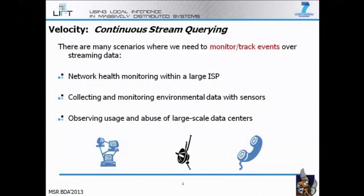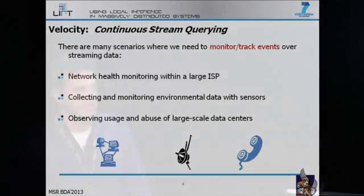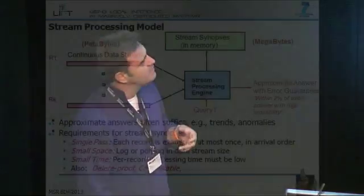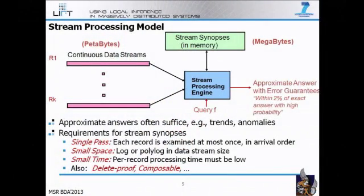The basic idea of streams is that you have all these new technologies that continuously generate data, and you need continuous queries over this data that continuously monitor the incoming streams for different patterns or events of interest. In the streaming algorithmic world, you have a stream processing engine observing continuous data streams, which can be petabytes or exabytes of data. You cannot afford to store all this data, so you build a stream synopsis kept in memory — orders of magnitude smaller than the original streams.